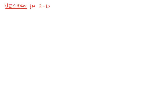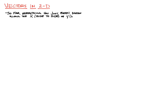We're beginning our new unit and we're going to look at vectors in two dimensions. That's the first part of this 2D kinematics thing. So far, everything has been along just the x-axis or the y-axis all by itself — the x-axis when we go side to side and the y-axis when we go up and down.